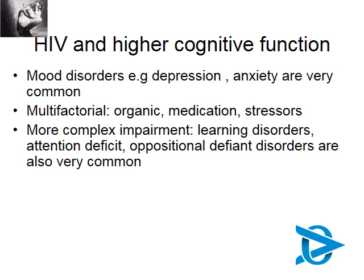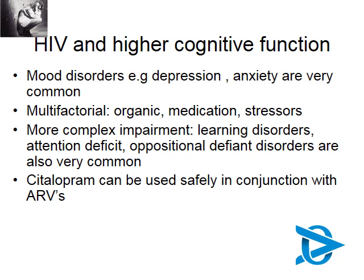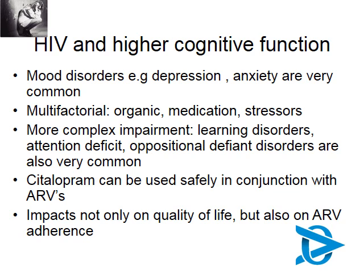Children with HIV can also have more complex impairments. We definitely see more learning disorders, more attention deficit, and more oppositional defiant disorders. It's important to consider medication as part of your multifactorial approach — citalopram as well as fluoxetine can be safely used in conjunction with ARVs. It's very important that this diagnosis is made early and addressed aggressively, because it impacts not only on the quality of life of the child, but also on their ability to take ARVs and on other important factors, such as suicide risk.